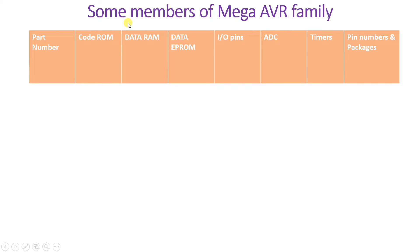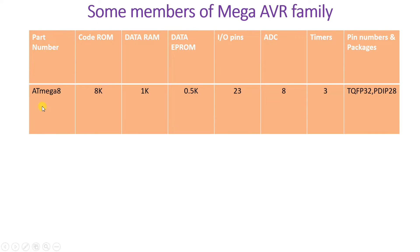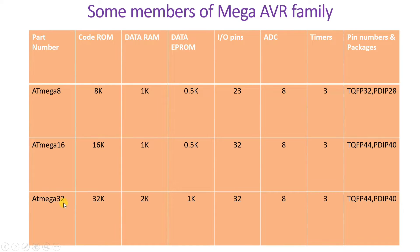Let us see the basic details of some members of the Mega AVR family: ATmega8, ATmega16, and ATmega32. The last digit in the name explains the code ROM size. So ATmega8 has 8K code ROM, ATmega16 has 16K code ROM, and ATmega32 has 32K code ROM. Data EEPROM is half of data RAM — so if you remember the EEPROM size, you can easily remember the RAM size.